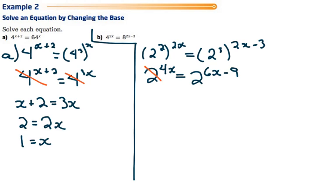We now have the bases the same, so we can cancel them. Say that 4x equals 6x minus 9.